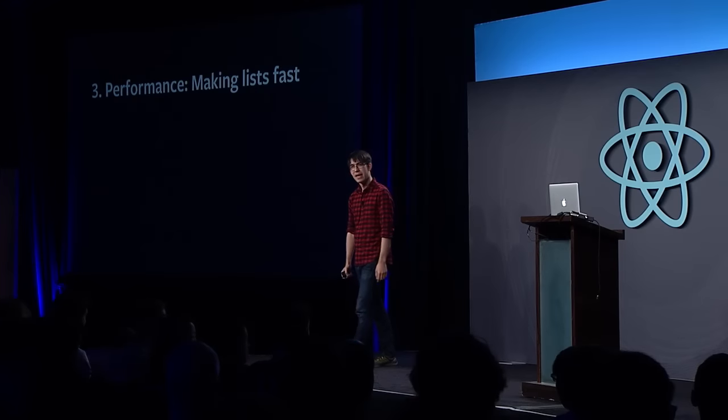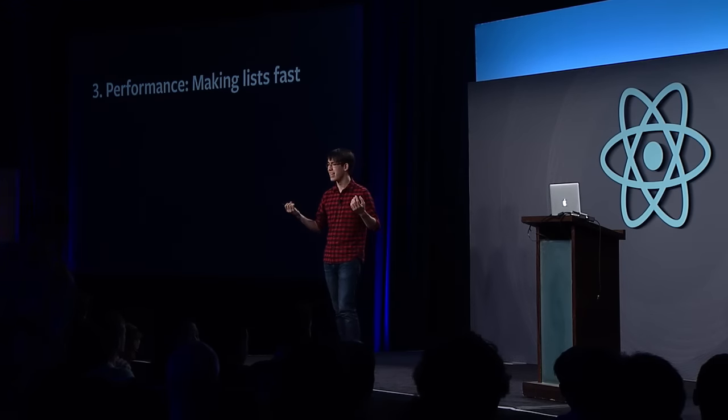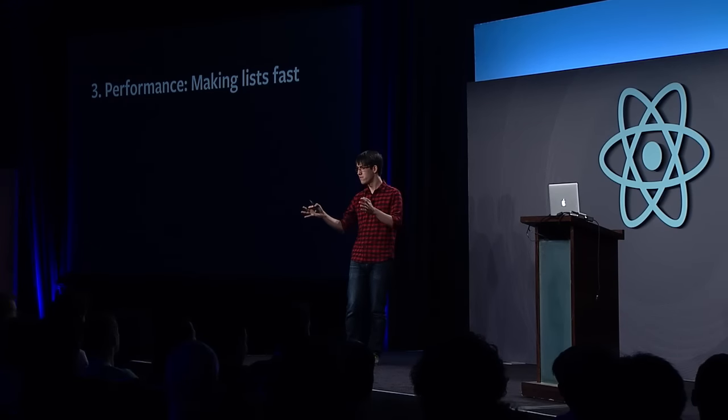The third piece of user experience I want to talk about is performance — specifically, making lists fast. If you're a web developer you might wonder why lists, but mobile developers will get it. If you look at almost any mobile app, they're all made up of lists — your mail client, messages, calendar, phone book, photos, settings — those are all lists. We think this is super important to make fast in React, and there are three techniques I want to talk about.